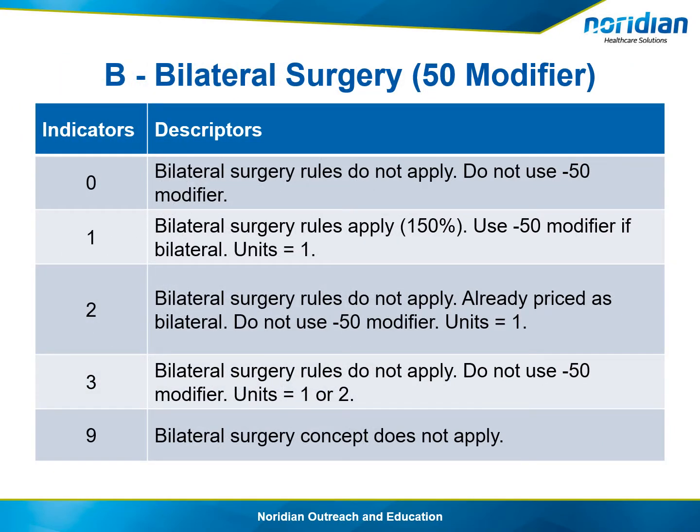B is for bilateral and the indicator is 1. Indicator 1 says bilateral surgery rules apply — use modifier 50 and the allowance is 150%. So that means billing either way has the same end result.